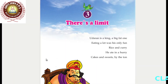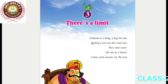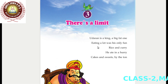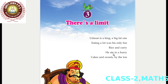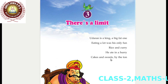Hi students, welcome to the third chapter, There is a Limit. Udran is a king, a big fight one. Eating a lot was his only fun. Rice and curry, he ate in a hurry, cakes and sweets by the ten.